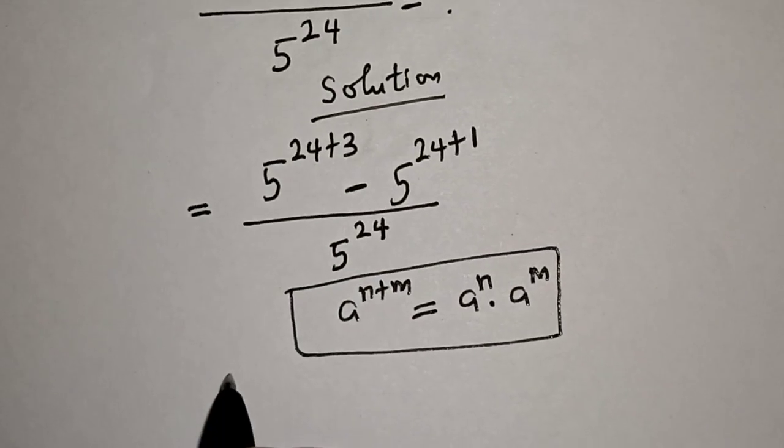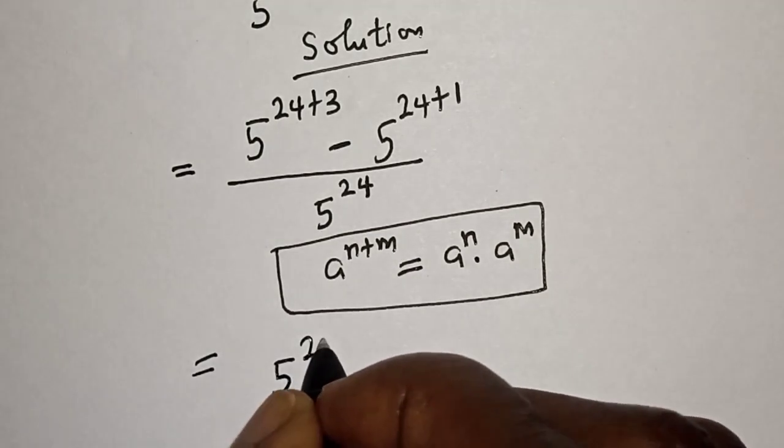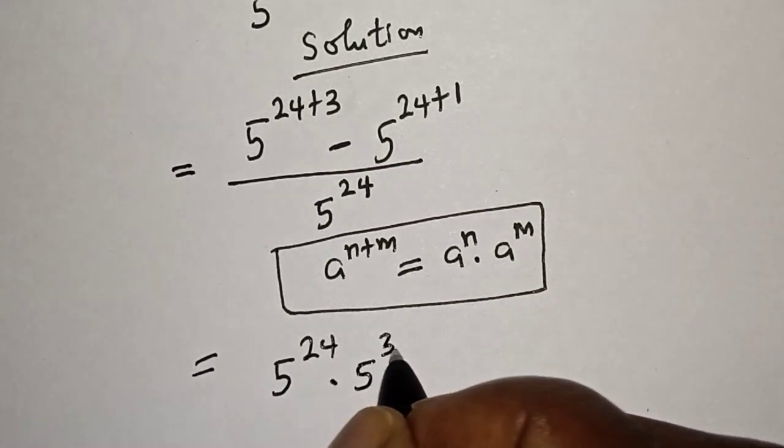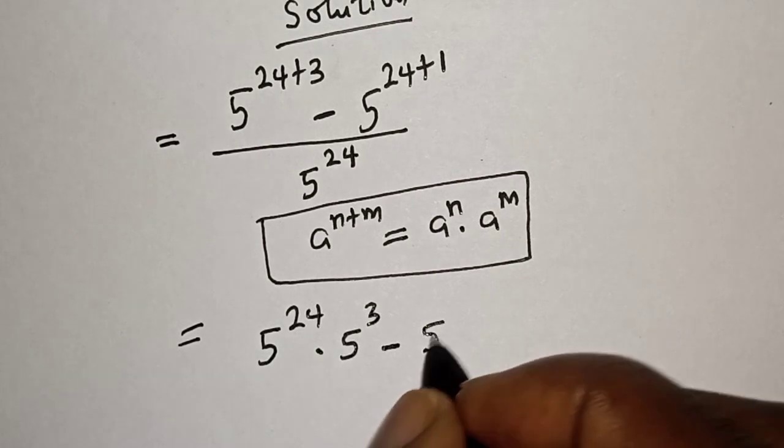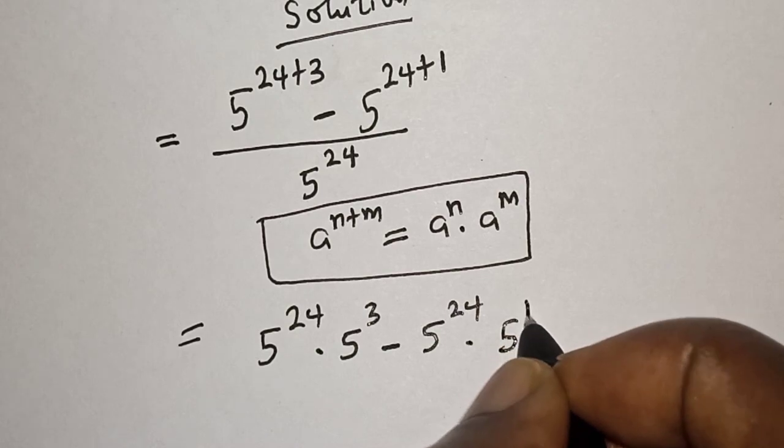And this is equal to 5 raised to power 24 multiplied by 5 raised to power 3 minus 5 raised to power 24 multiplied by 5 raised to power 1